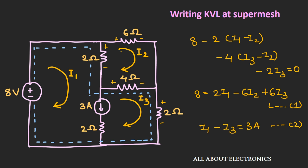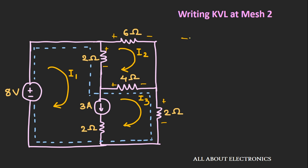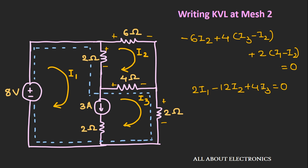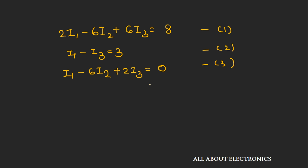Now writing the KVL equation for mesh number 2: −6I2 + 4(I3 − I2) + 2(I1 − I2) = 0, which simplifies to 2I1 − 12I2 + 4I3 = 0, or I1 − 6I2 + 2I3 = 0, which is equation number 3. We now have three equations and three unknowns. Solving them gives I1 = 4A, I2 = 1A, and I3 = 1A.